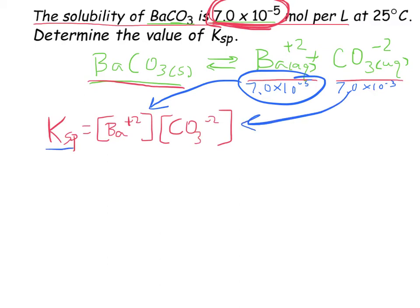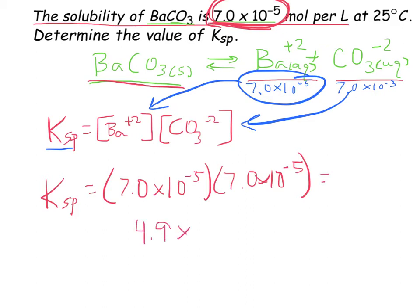So, since I don't actually have the Ksp for BaCO3, or if it's on the chart, we're not looking, I end up with Ksp equals 7.0 times 10 to the negative 5 times 7.0 times 10 to the negative 5. Or, if you prefer, 7.0 times 10 to the negative 5 squared. Type that in your calculator and you get 4.9 times 10 to the negative 9. And that's really all there is for Ksp. That's it. That's your answer.